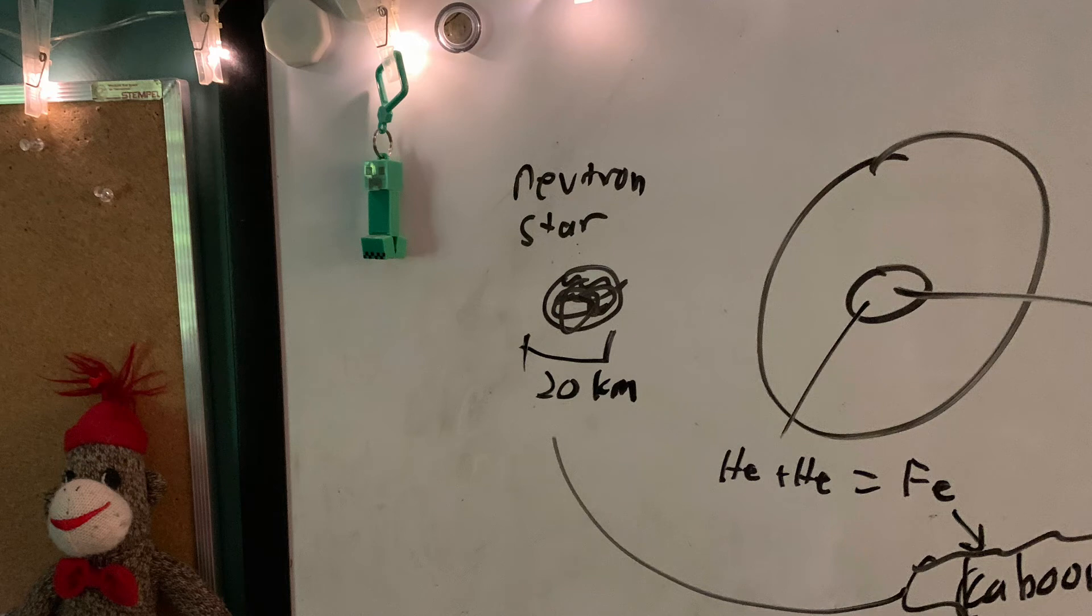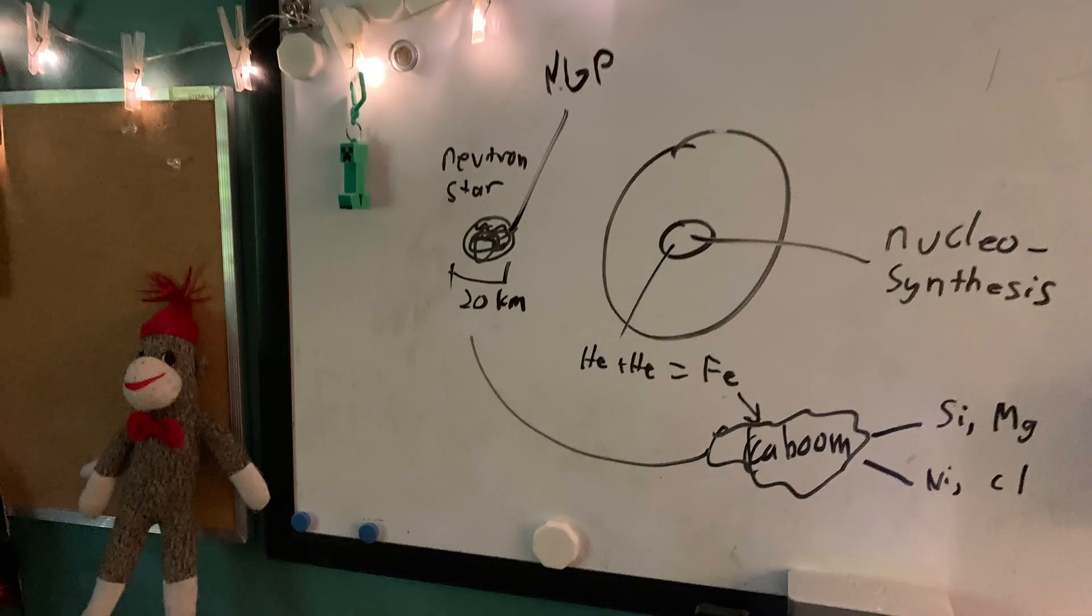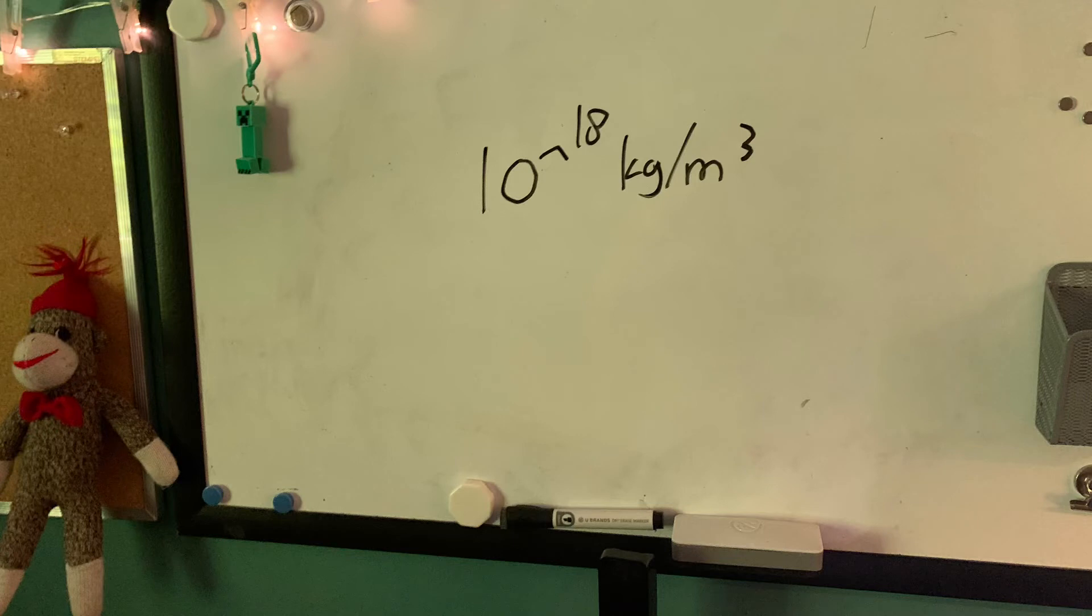Oh, and speaking of degeneracy, a neutron star can only condense so much before it physically can't anymore, and this is called neutron degeneracy pressure. The average density of these objects is about 10 to the 18 kilograms over meters cubed, which is almost as dense as you are.